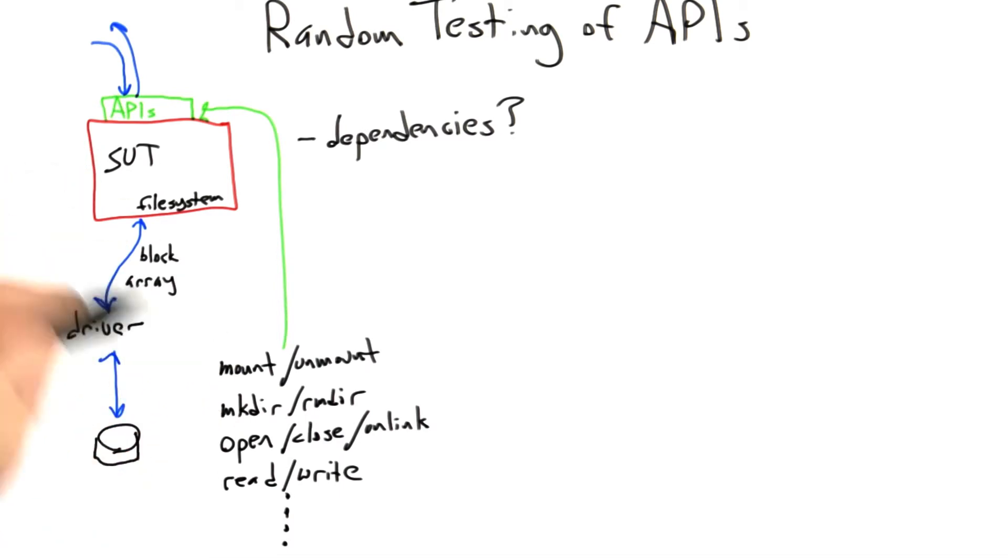And so what we're seeing is that if we want to do effective random testing of a file system, we're going to need to track these dependencies, at least in some rudimentary fashion, in order to issue a sequence of API calls that's going to do reasonably effective random testing of the file system.